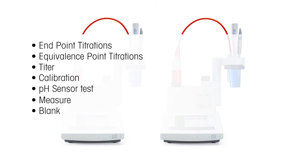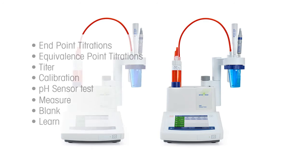Blank methods are used to account for a solvent blank in our titration. Running this method stores the result as a blank value, which is in turn used in calculation of the sample's titration method, subtracting it from the result. Lastly, the learned titration is used, for example, with an unknown new sample to determine the best parameters for carrying out an EQP titration.